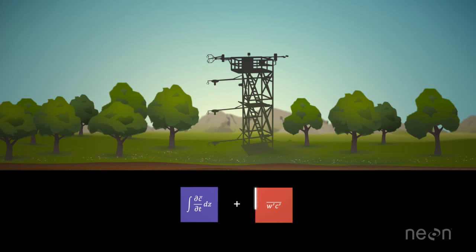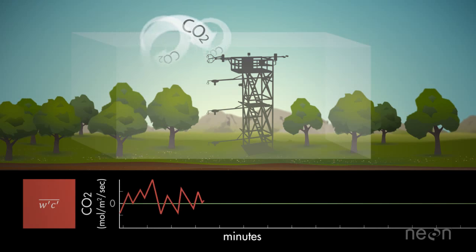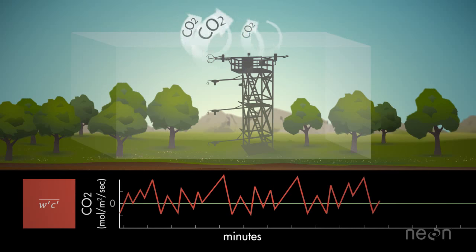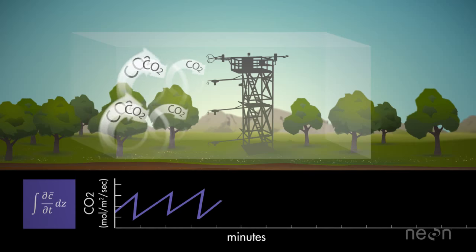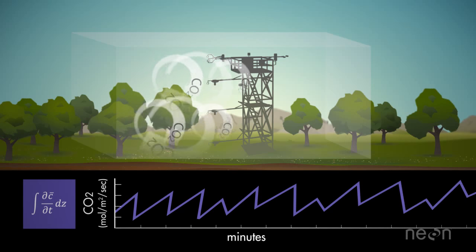Two types of observations are primarily used to approximate the gas exchange. Imagine we place a box over the ecosystem. The gas moving in and out of the top of the box is calculated as fluctuations around the mean. The gas accumulated inside the box is calculated from the trend of gas concentration measurements in that area.